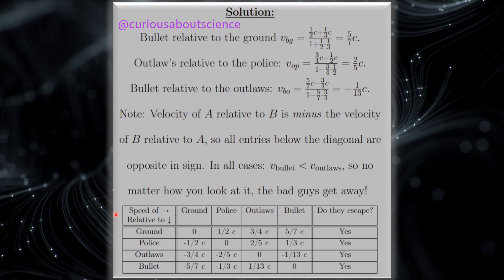Now this was a really fun thing to compile because it makes us take into account the referencing of everything to one another. The ground to the ground, the police to the police, the outlaw to the outlaw, and the bullet to the bullet. But of course, they should all be zero because the bullet relative to the bullet, all you have is the same velocity over the same thing. So of course, it should be zero.